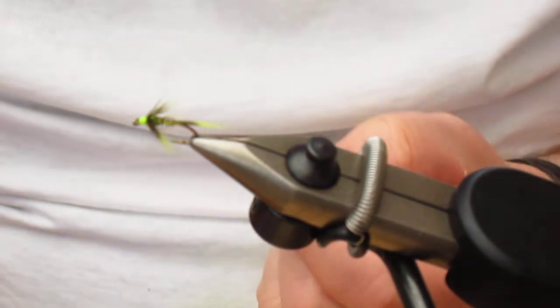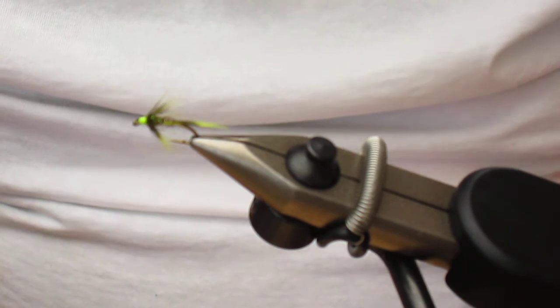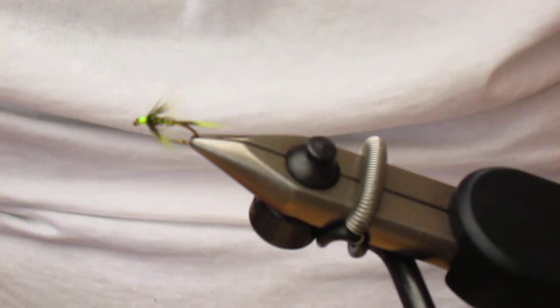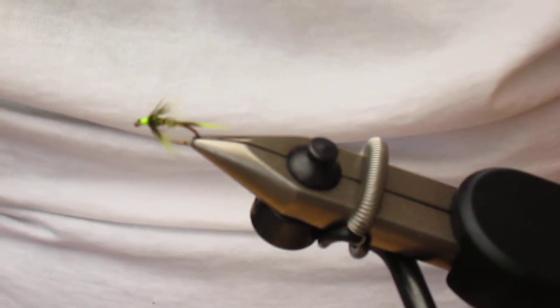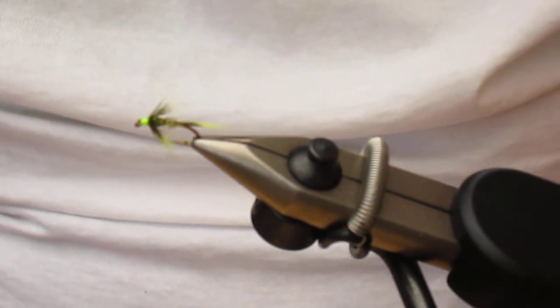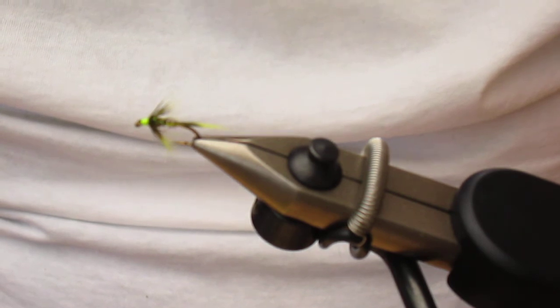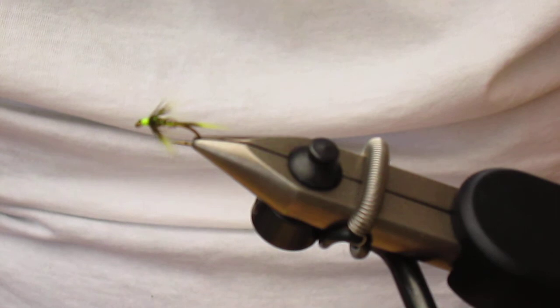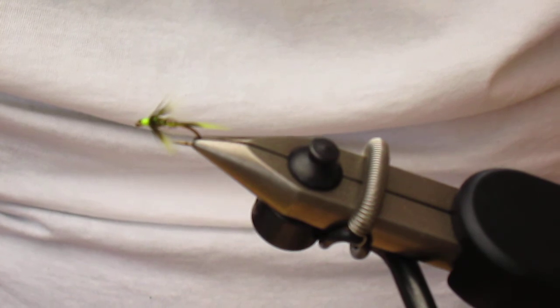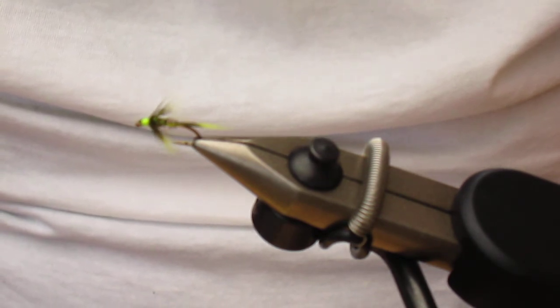There we go. Now that's the fly finished, and it's a really nice fly to use as a middle dropper. It works extremely well for both browns and rainbows. But many thanks for watching. I hope you get round to tying it, and I'm absolutely sure it will catch you fish. And I'm going to say good afternoon to you all, and have a good day. Thank you very much for watching.